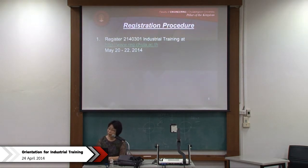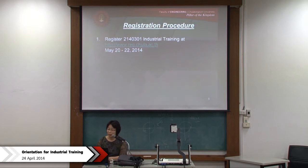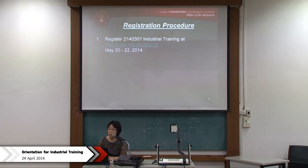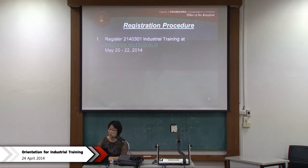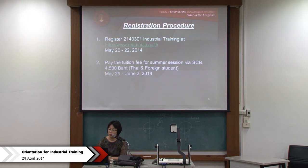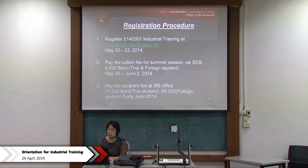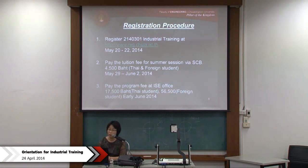Now the registration procedure. You have to pay attention to the date. May 20th to May 22nd is the period when you can register for industrial training. There are two fees. The first fee is the tuition fee, which is payable at SCB. The course fee is 4,500 baht — cheaper than the normal semester — and the payment window is May 29th to June 2nd.